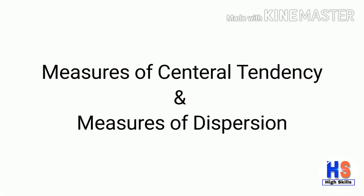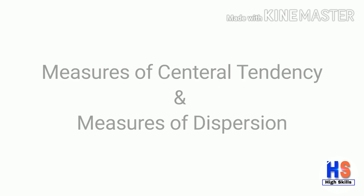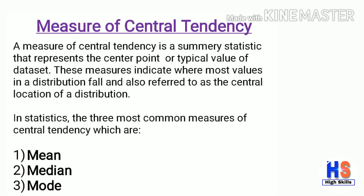In SPC it is very important to understand measures of central tendency and measures of dispersion. A measure of central tendency is a summary statistic that represents the center point or typical value of a dataset. These measures indicate where most values in a distribution fall, also referred to as the central location. The three most common measures of central tendency are mean, median, and mode — and mean is the one widely used in SPC.